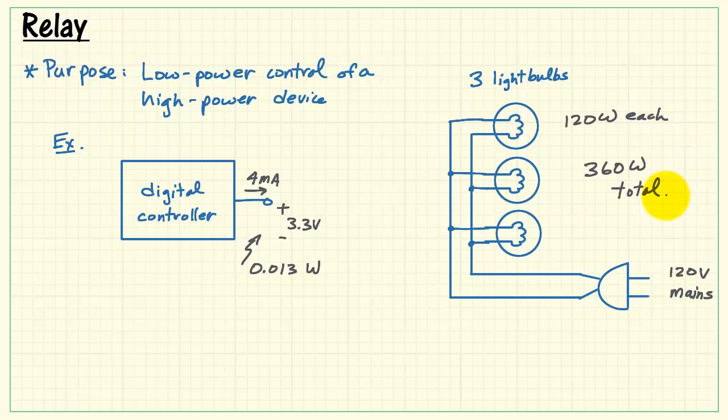That's a total of 360 watts to make all three lights come on, clearly much higher than 13 milliwatts. Consequently, the relay serves as a bridge between the low-power and the high-power circuit.